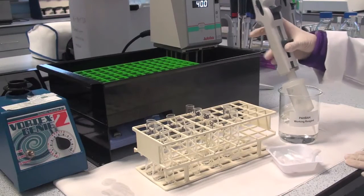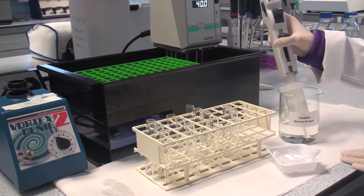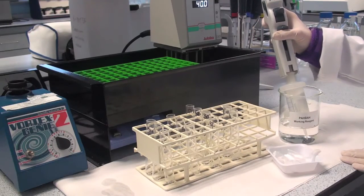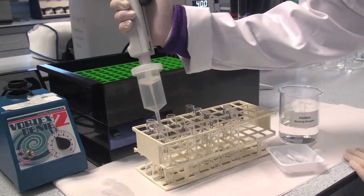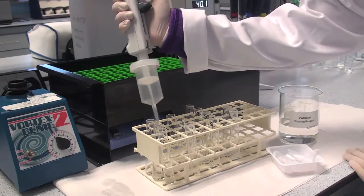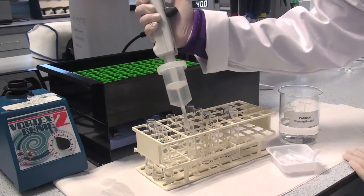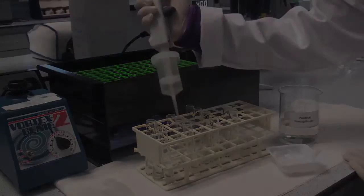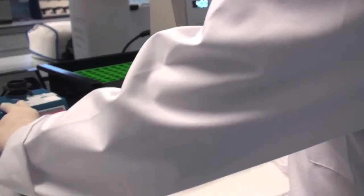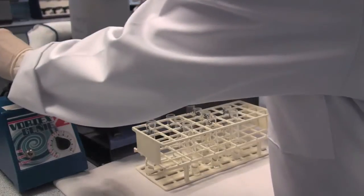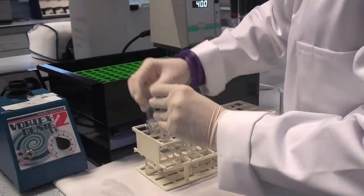Add 5 mls of PAHBAH working reagent to all tubes: the samples, the sample blanks, the fructose standard reagent blank, and the fructose cellulose control sample if included. Mix the tube contents thoroughly on a vortex mixer.